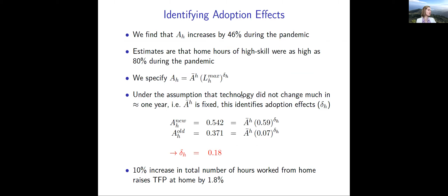Regarding adoption effects: A_H increased by about 46% during the pandemic. We specify TFP of work-from-home as driven by fixed parameter A-bar_H and the maximum historical number of hours worked from home raised to power delta_H. We assume there was no massive innovation in work-from-home technology — it only lasted about a year and many of us are getting back to the office. So A-bar_H is fixed, which allows us to identify adoption effects. Previously the historical maximum was 0.07, and this gives us delta_H = 0.18, meaning a 10% increase in total hours worked from home raises TFP at home by 1.8%.